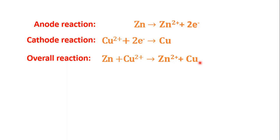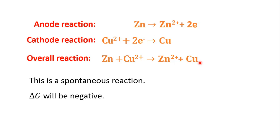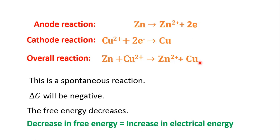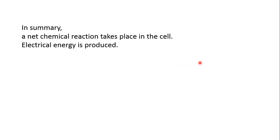If this reaction is going to happen spontaneously, the sign of ΔG should be negative — the free energy decreases during the reaction. The decrease in free energy is equal to the increase in electrical energy; the free energy that decreases during this chemical reaction is converted into electrical energy. That is, chemical energy is converted into electrical energy. This is what is taking place in this cell.